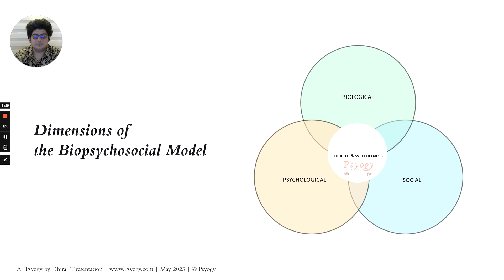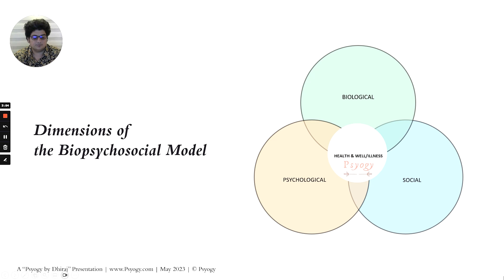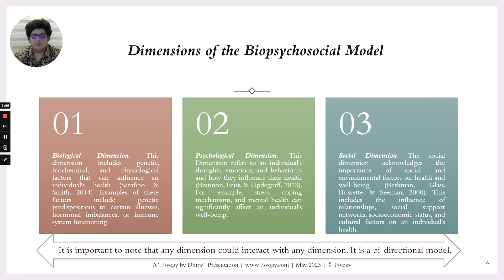The dimensions of the biopsychosocial model represent the interaction of biological, psychological, and social factors. The interaction of all these elements together forms your health, wellness, illness, or manifestation of illness. The amalgamation of all these factors put together is the biopsychosocial model.